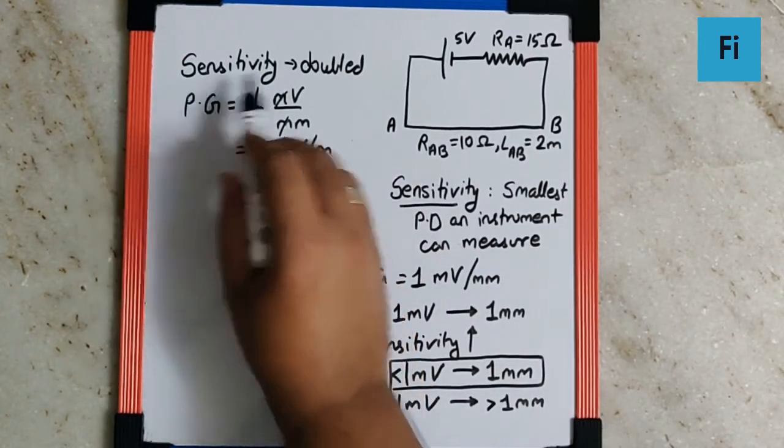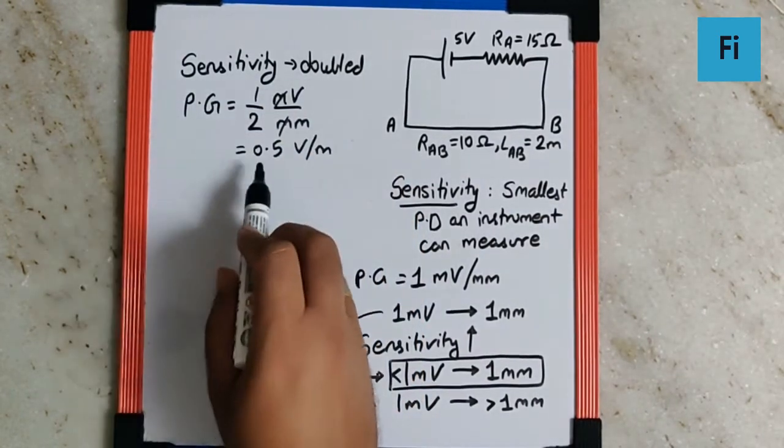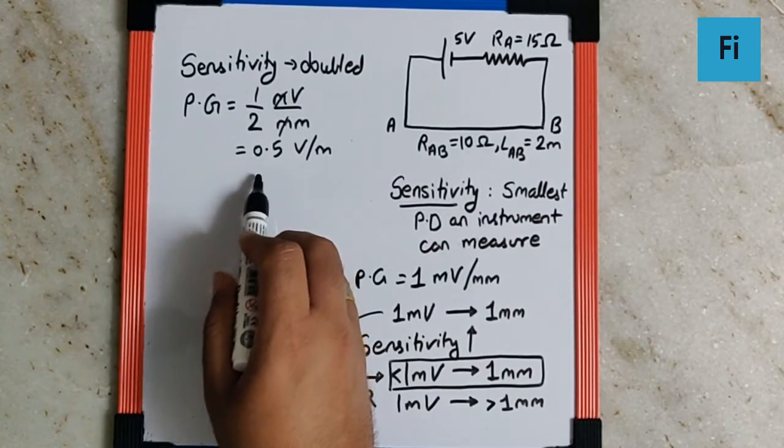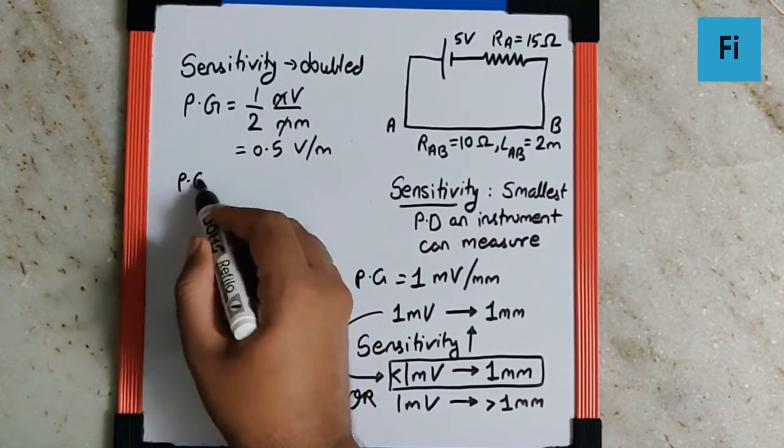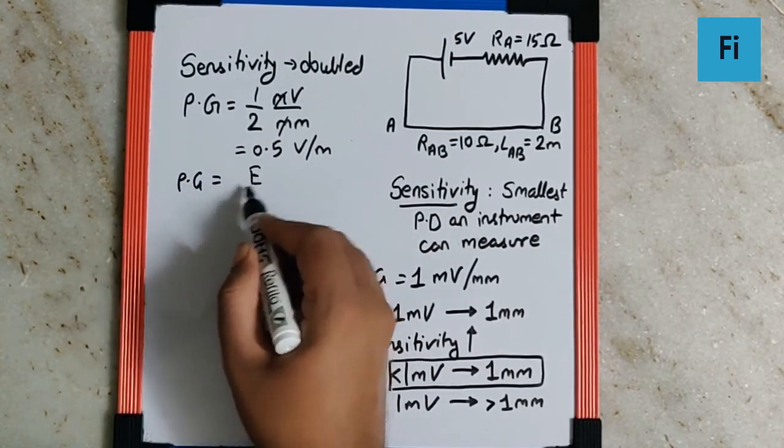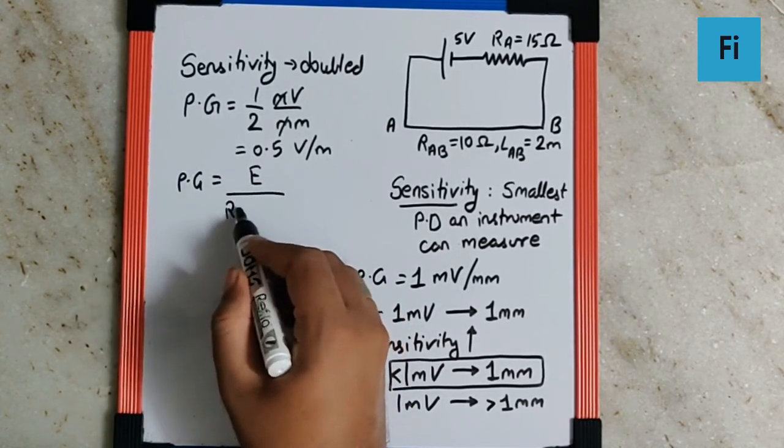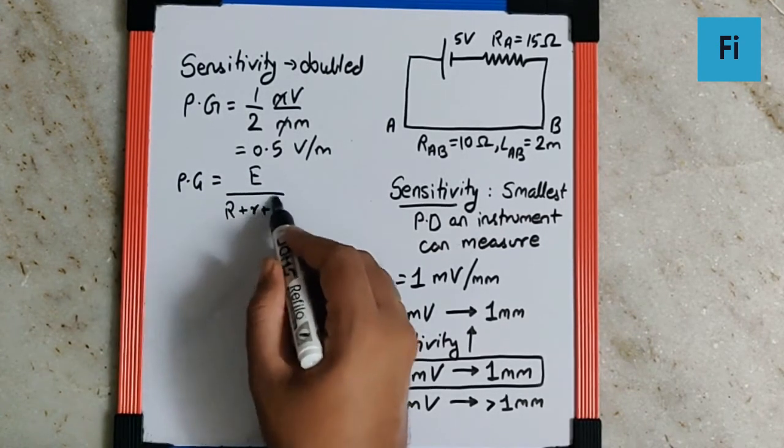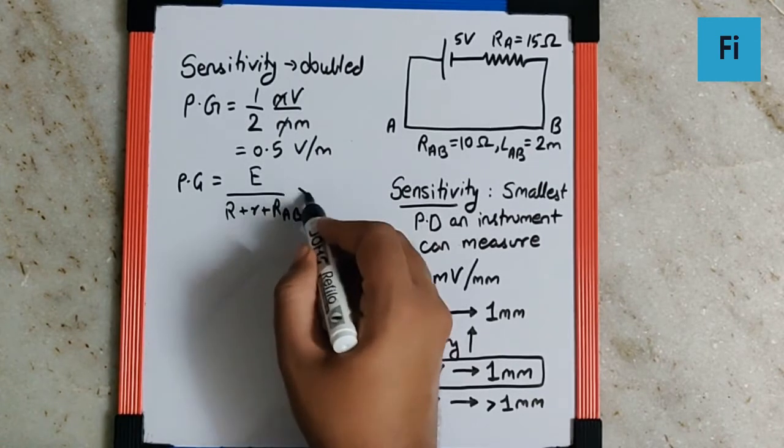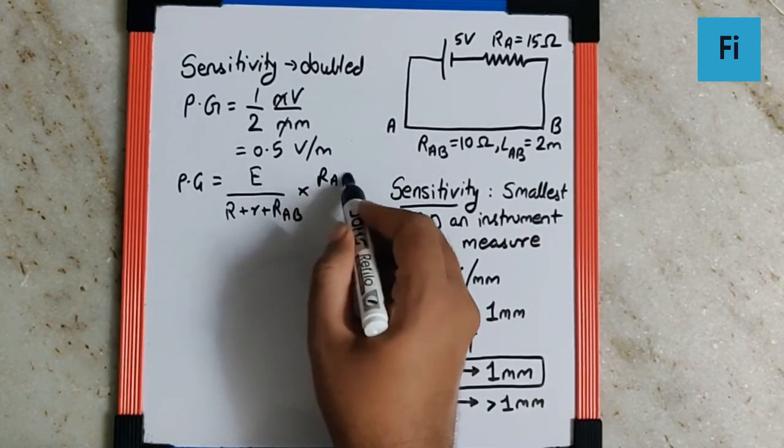So to get this sensitivity double we need to actually make the potential gradient half. Now we know the potential gradient formula which is E upon R plus RA plus RAB into RAB by LAB.